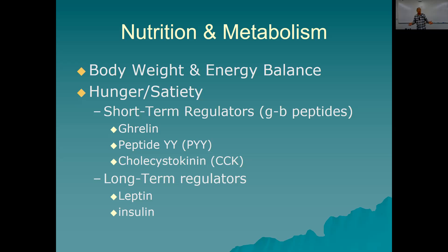So energy balance — we have a certain metabolic rate. You need a certain number of calories. I will define what calories are a little later on. Every day in order to stay alive and maintain weight, the average number is 2,000, though it's variable for everybody. What's called basal metabolic rate is how many calories you need just to stay alive — that's called basal metabolic rate, and it's dependent upon a lot of things.